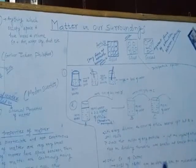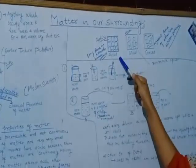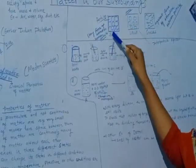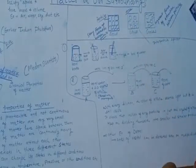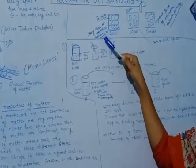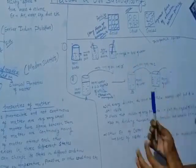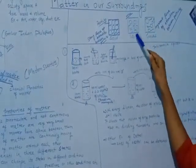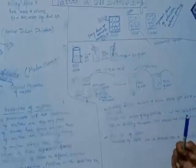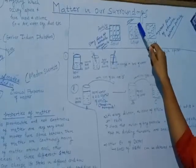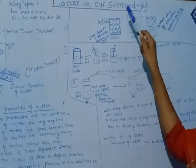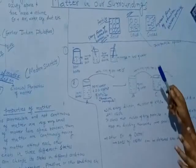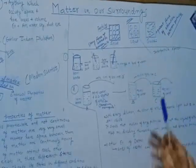The arrangement of particles in solid, liquid, and gases is different. In solid, the particles are very closely arranged with each other and there is no space between two particles. Hence the force of attraction between particles is very strong and they are very compactly arranged. In liquid, the particles are loosely arranged and the space between them is much greater compared to solid.